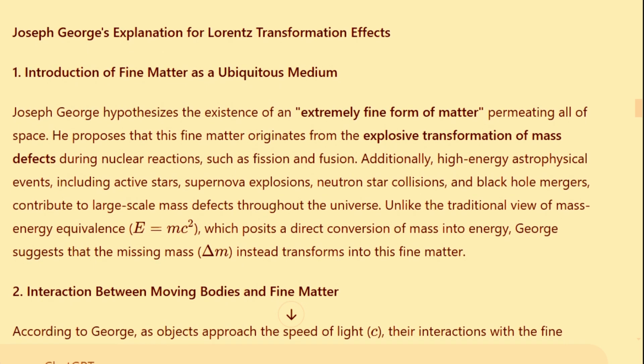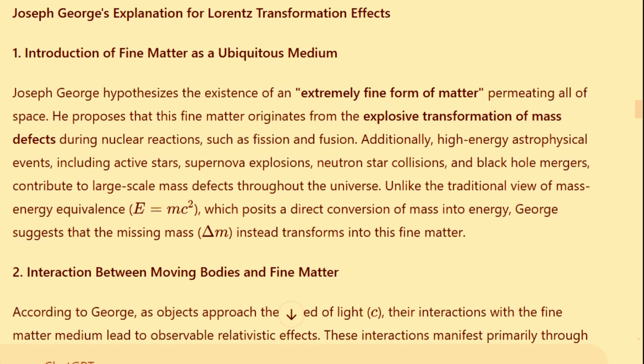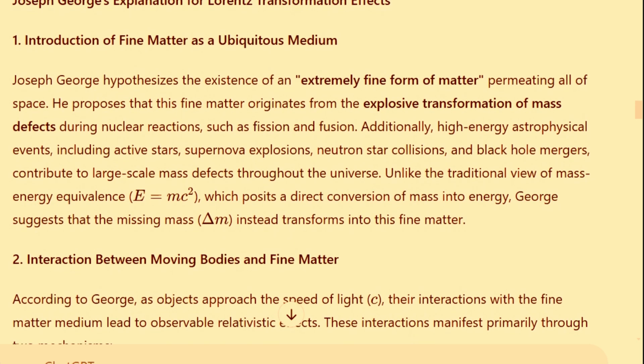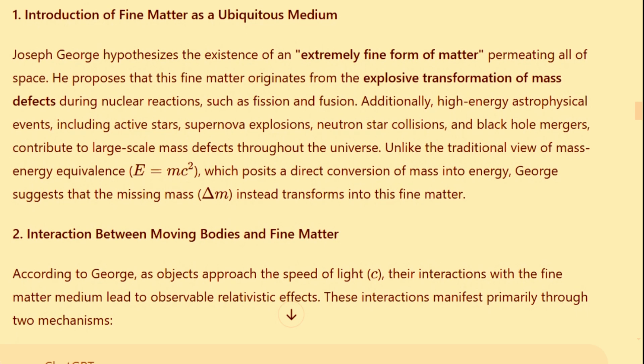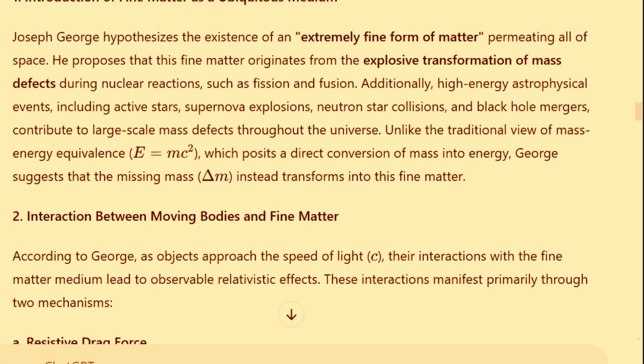Joseph George hypothesizes the existence of an extremely fine form of matter that permeates all of space. This fine matter is proposed to originate from the explosive transformation of mass defects during nuclear reactions, such as fission and fusion.